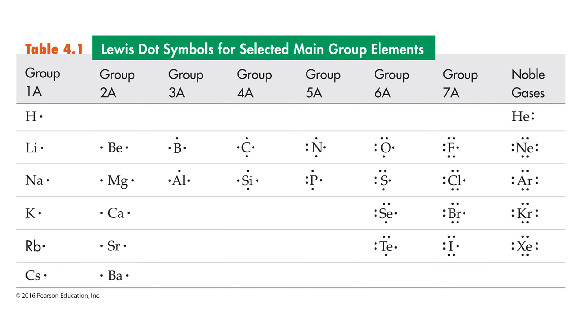They range from left to right here from one valence electron all the way up to eight valence electrons.